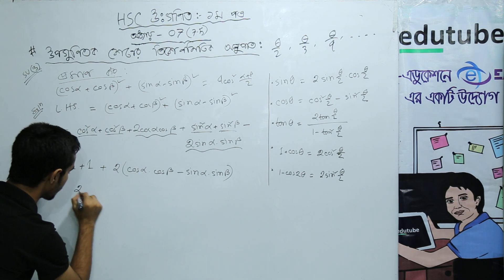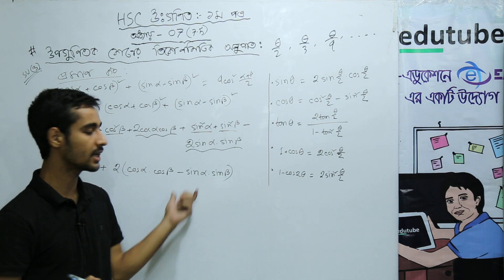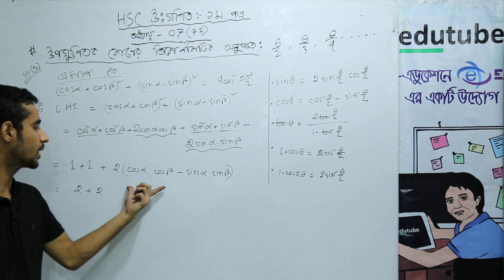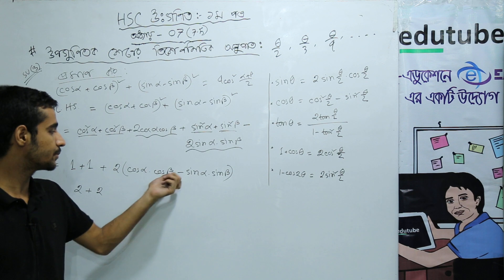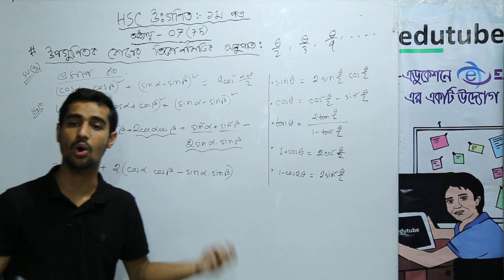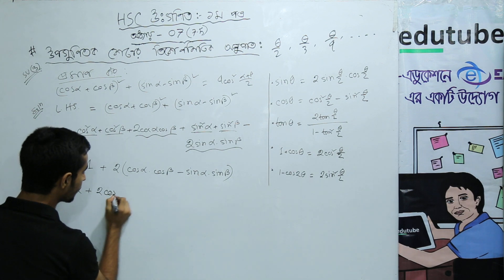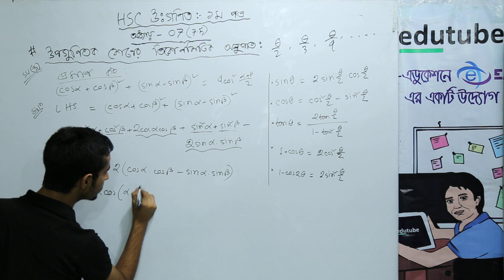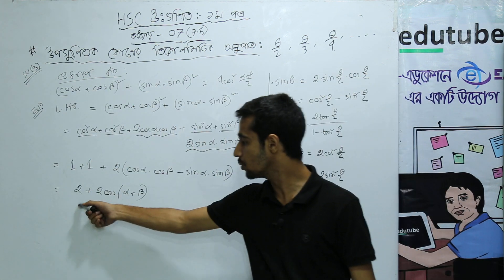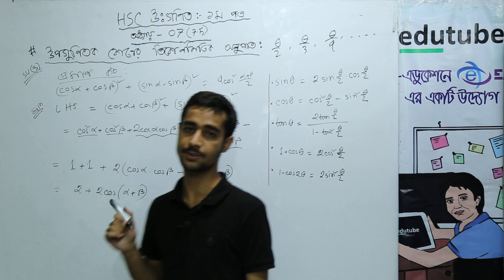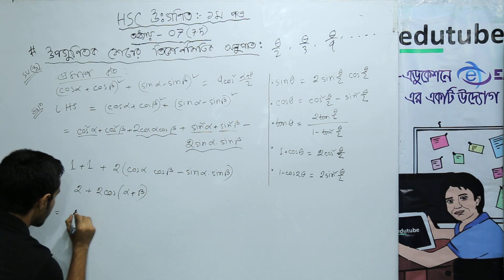So 1 plus 1 equals 2, plus 2 into cos alpha cos beta minus sin alpha sin beta. By the cos(a+b) formula, cos a cos b minus sin a sin b equals cos(a+b). So this gives us 2 plus 2 cos(alpha plus beta).